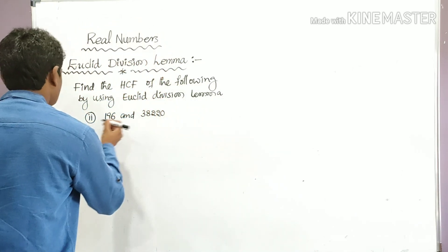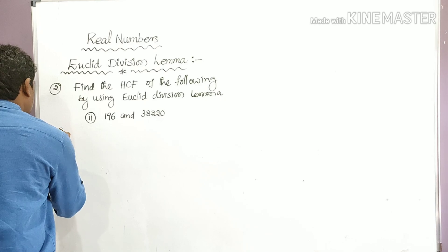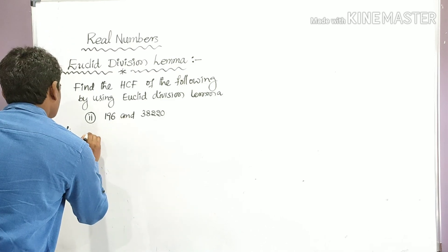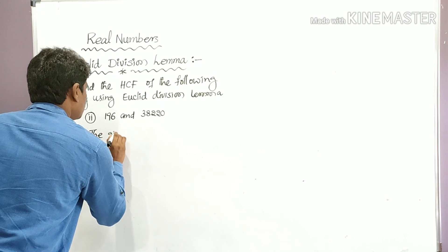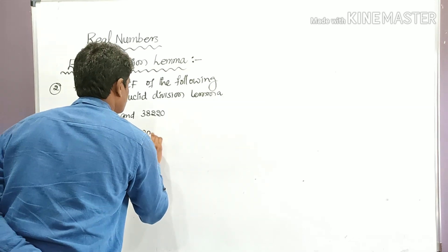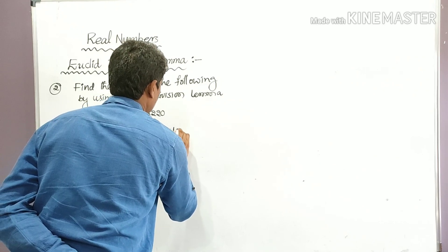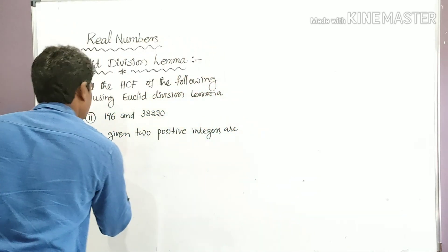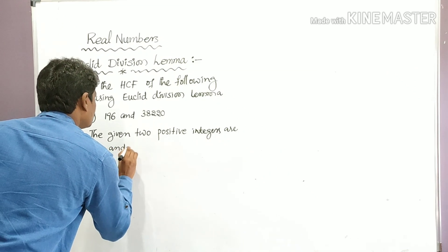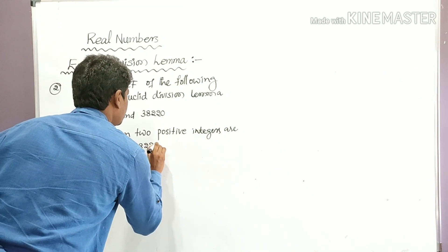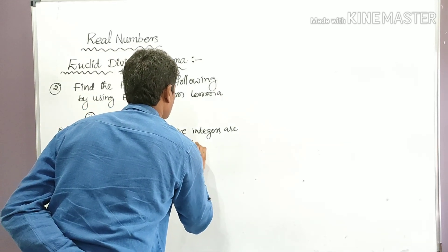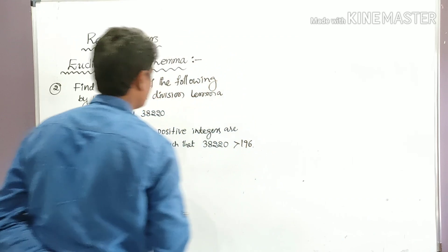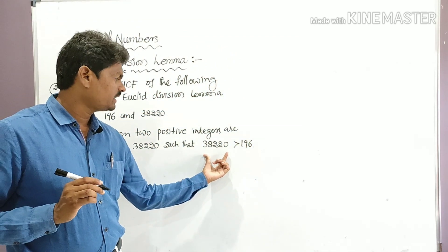The given two positive integers are 196 and 38,220. It is clear that 38,220 is greater than 196, so now we have to divide 38,220 by 196.